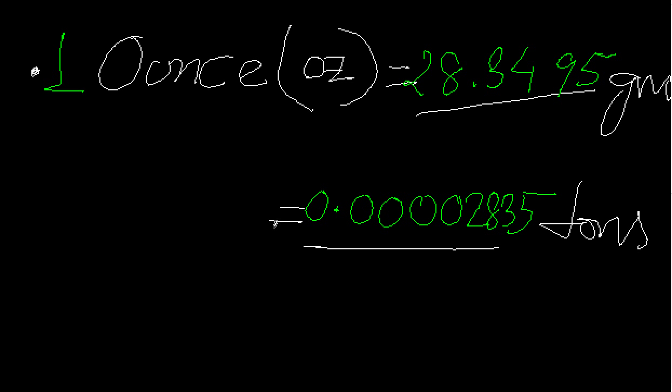So whenever I need to convert ounce into gram or ounce into tons, I have to use these relations. That means if it is asked 2 ounce or 3 ounce equals how much gram or how much tons, I have to multiply that number with the numbers I am seeing here.